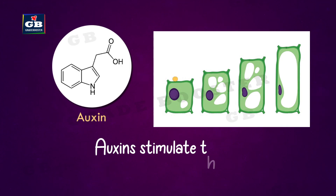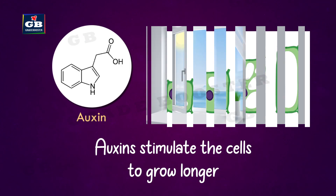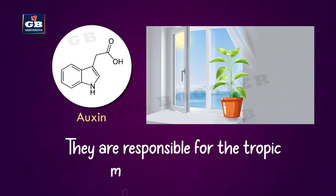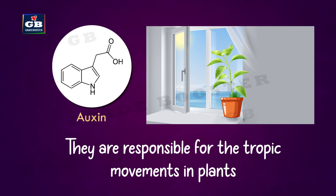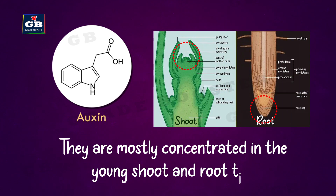Auxins. Auxins stimulate the cells to grow longer. They are responsible for the tropic movements in plants. They are mostly concentrated in the young shoot and root tips.